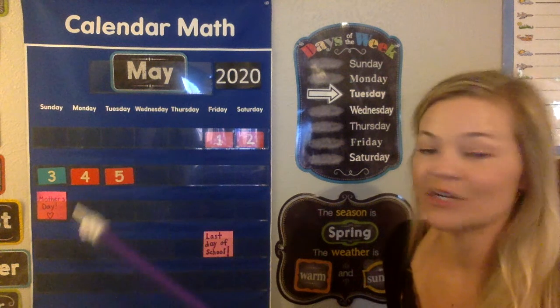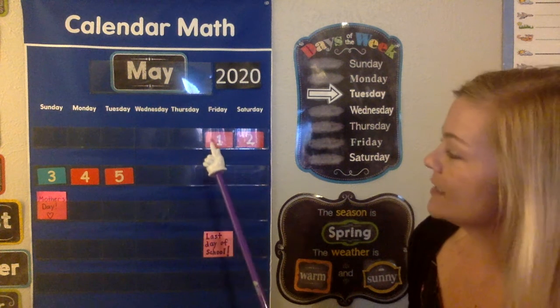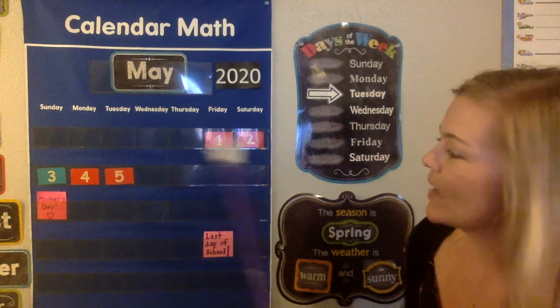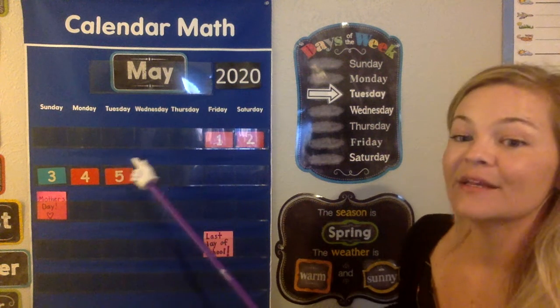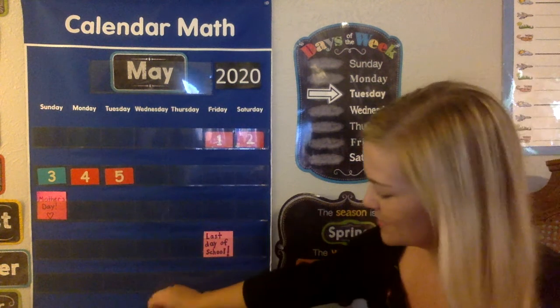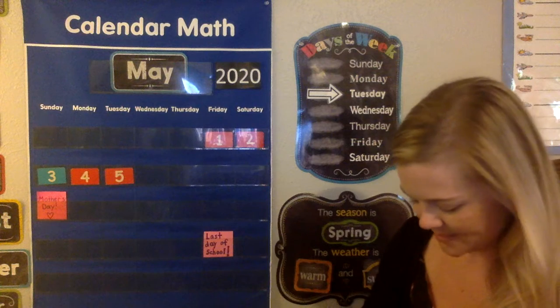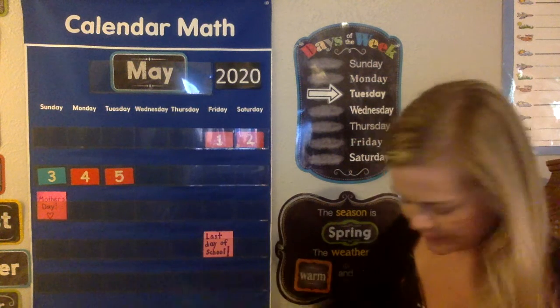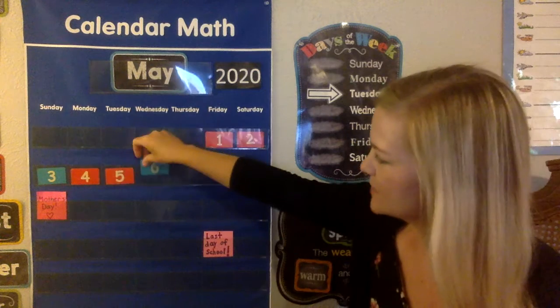Now we need to do the color. Our pattern this month is a color pattern and it's red, red, blue. Red, red, blue. So that means number 6 today is going to be blue. Here's my blue number 6. I'm going to put it in there for today.